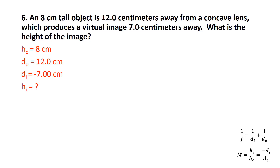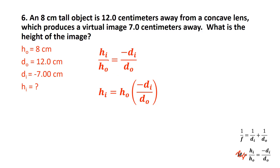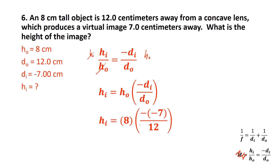Problem 6: Same concave lens setup — 8 cm tall object, 12 cm away, virtual image 7 cm away. What's the height of the image? Using HI = HO × (−DI/DO), I rearrange, cancel the negative negatives, and type 8 × (7÷12) = to get 4.7 centimeters.